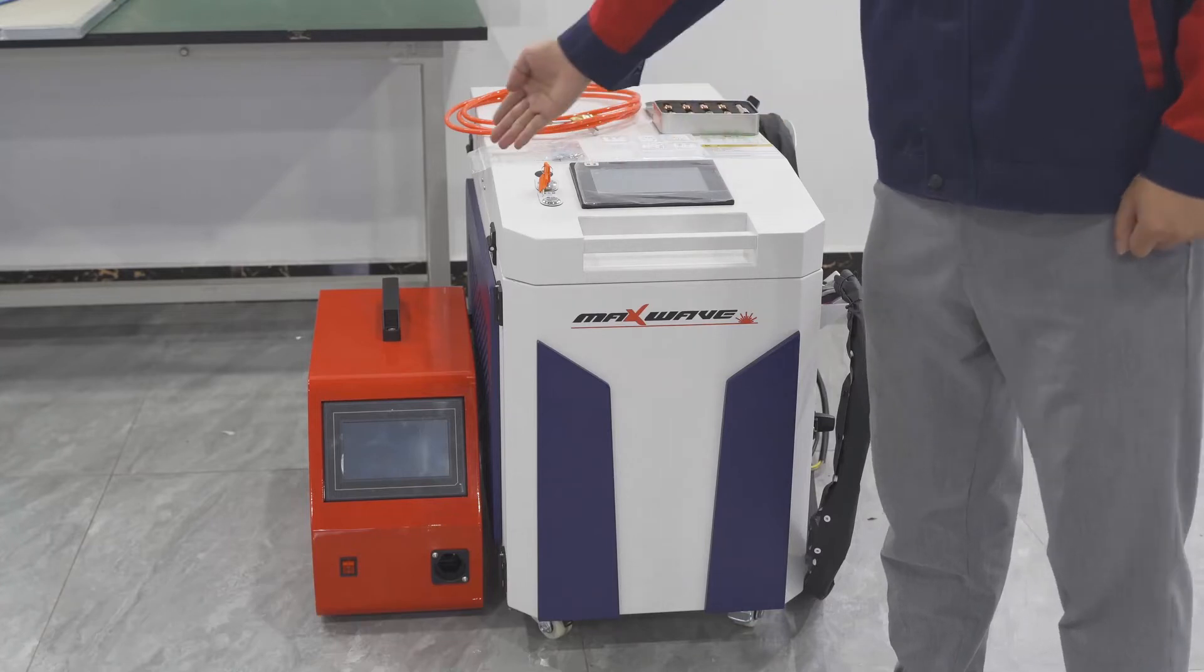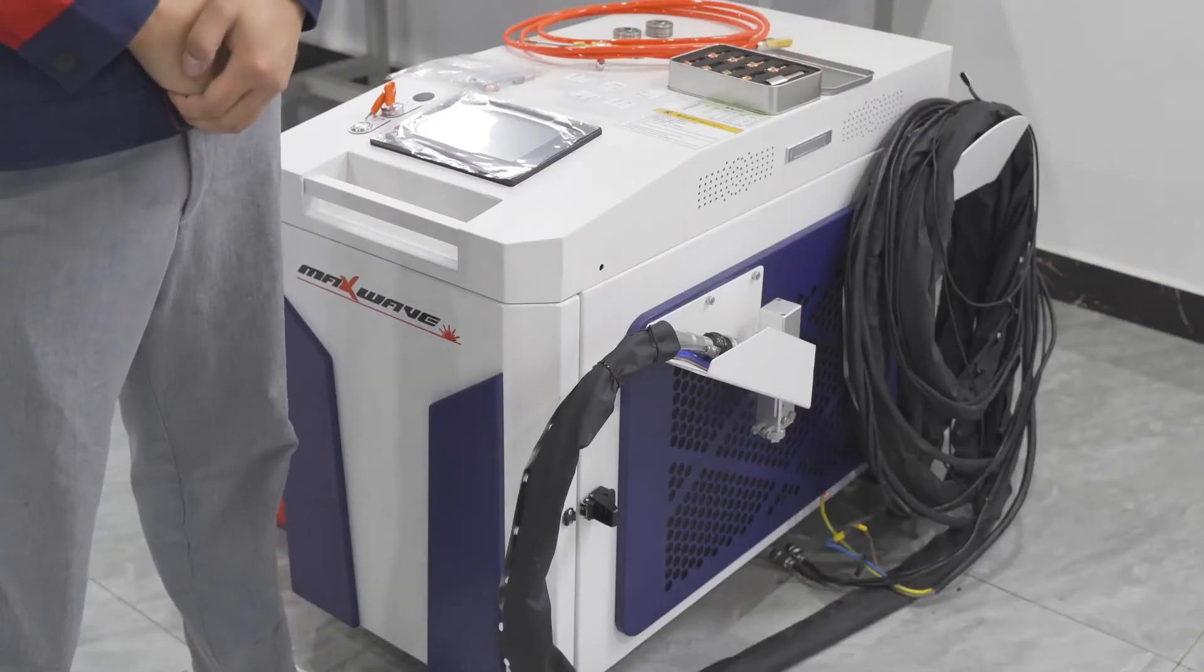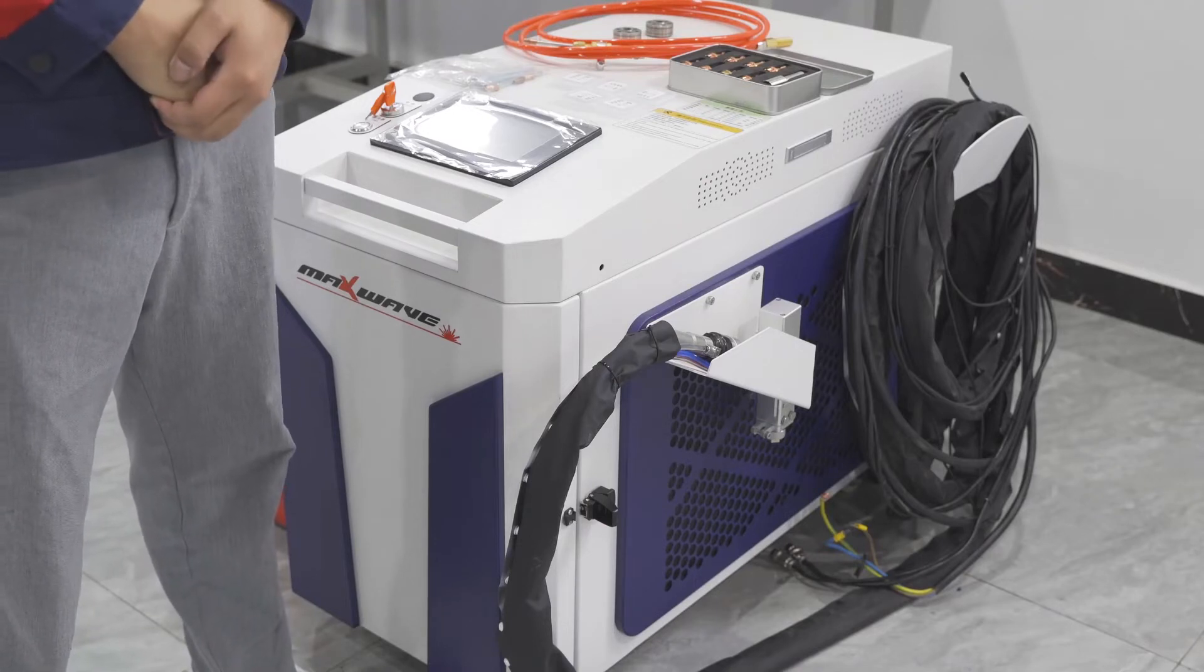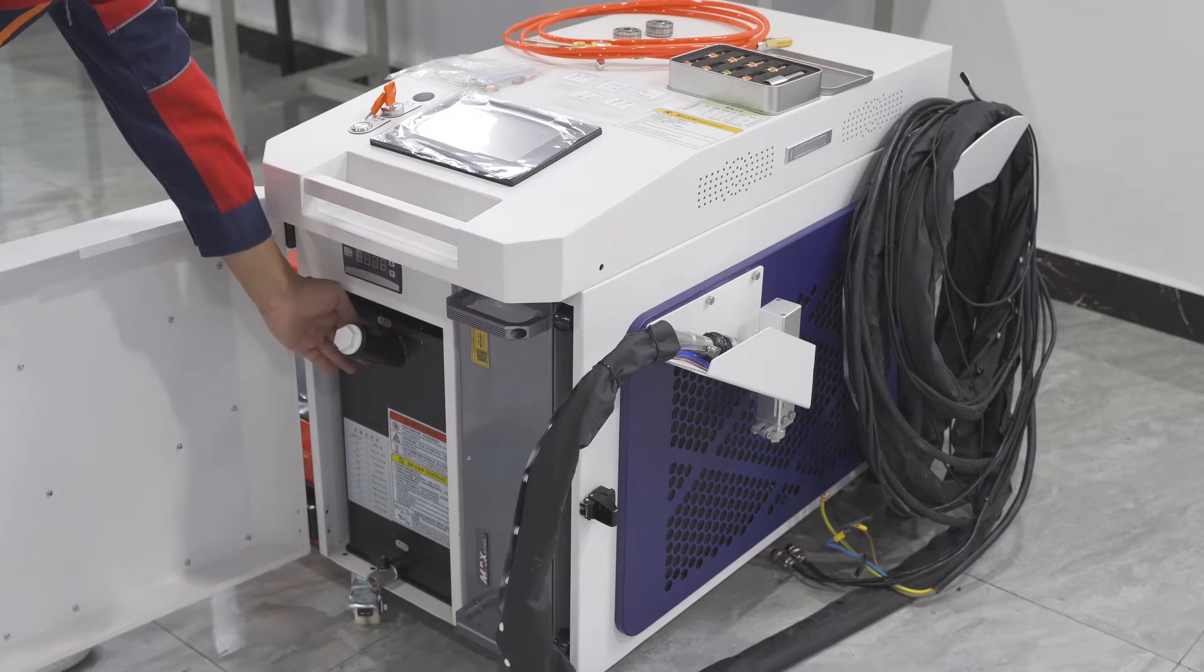This is the welding machine, and this is the weld feeder. The handheld laser welding machine is made by different parts. This is the laser source, and this is the water chiller.